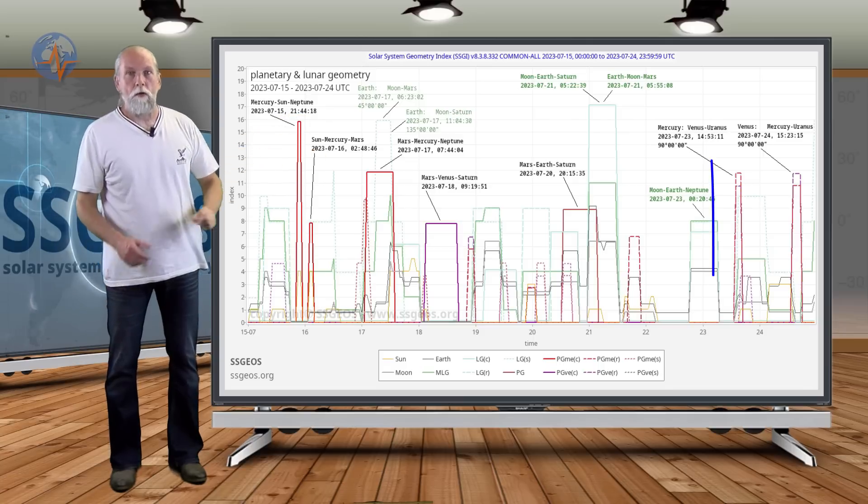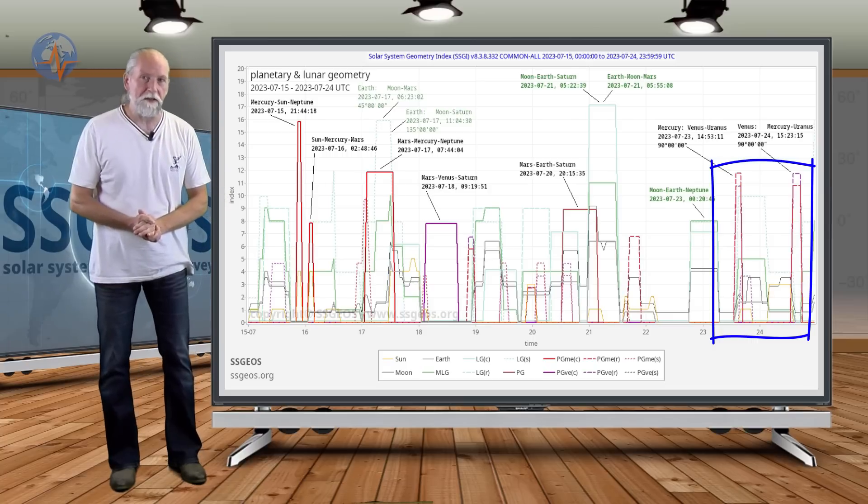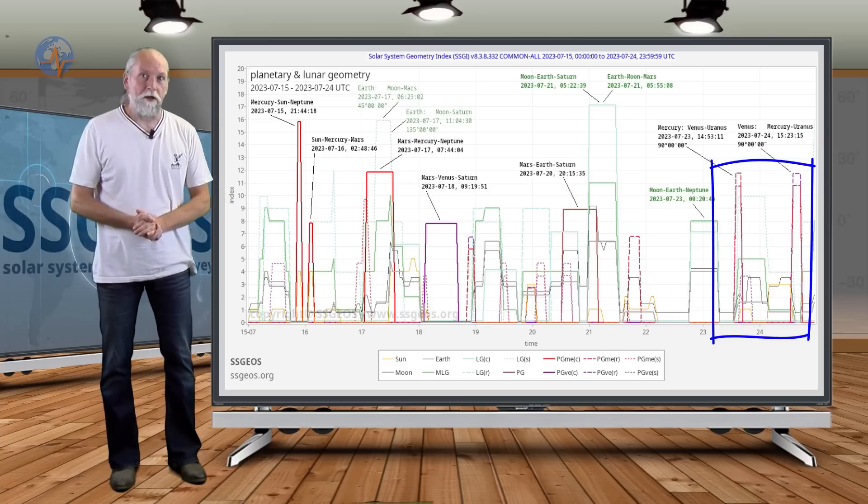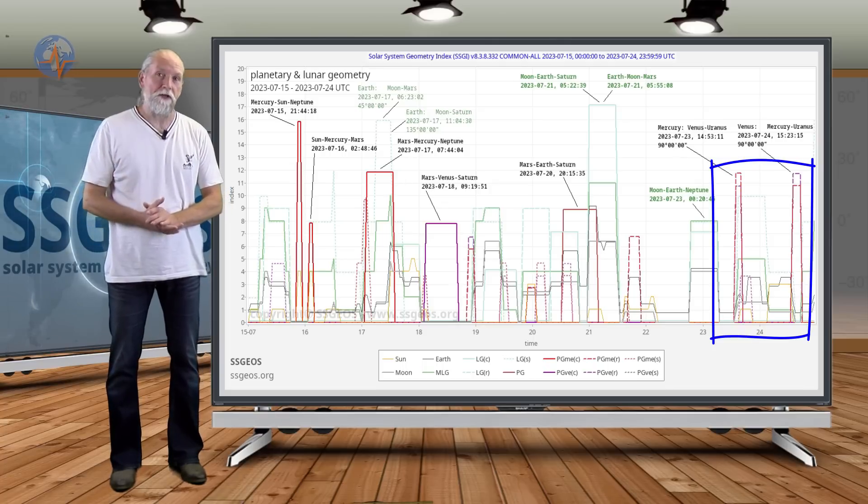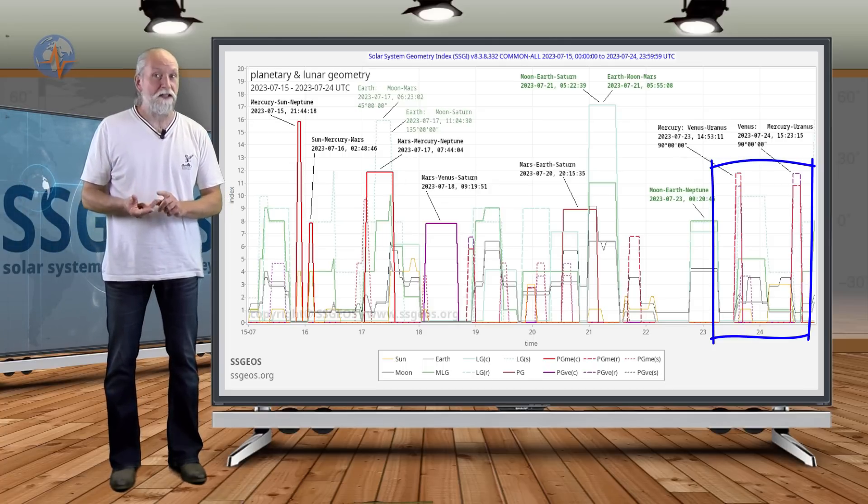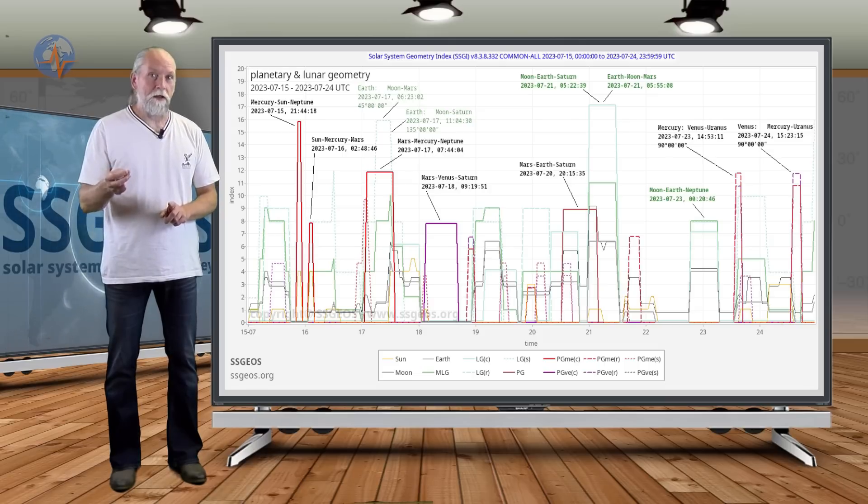This is also going to be critical. Finally, at the end on the 23rd and 24th we have the typical pair of 90 degree angles with Mercury-Venus and Uranus. The last three times that this happened in May, January, and September 2022, we had mid seven magnitude earthquakes following that particular geometry. I will discuss that in the next update when we get there because that is very interesting but also very critical geometry.